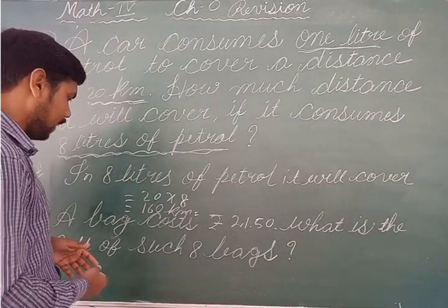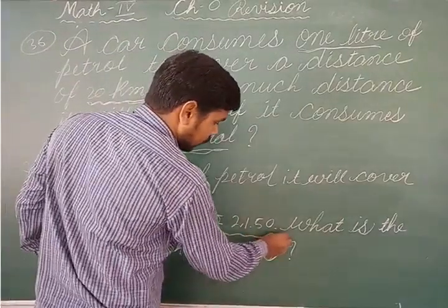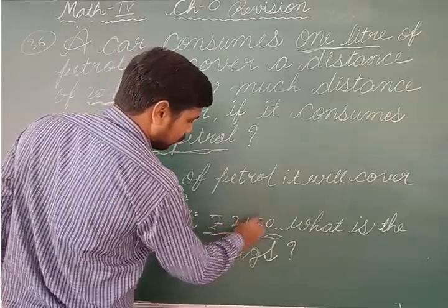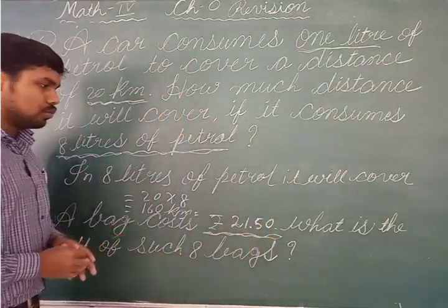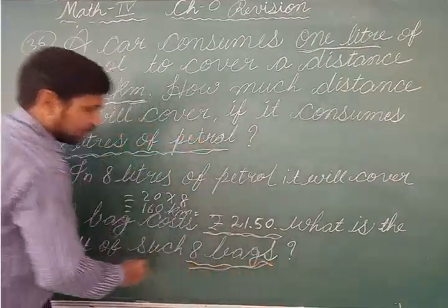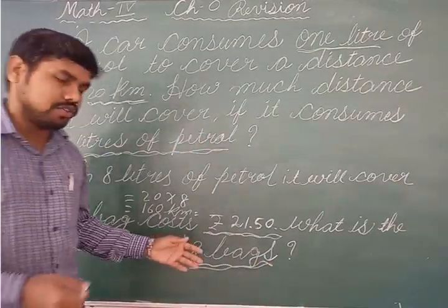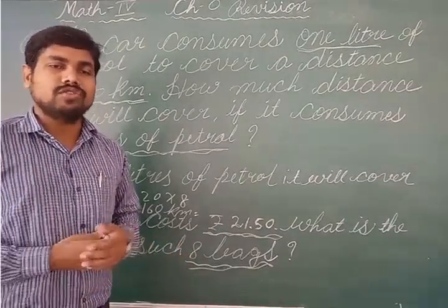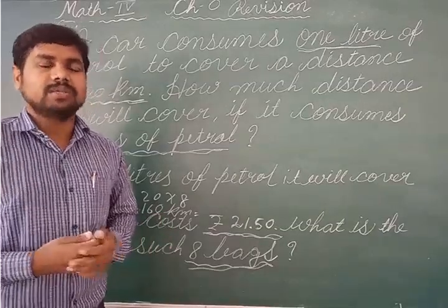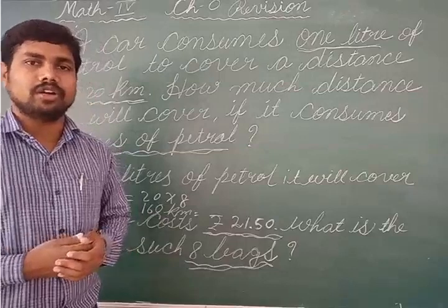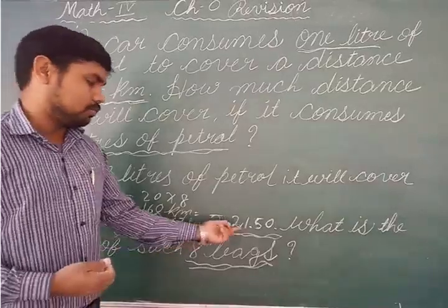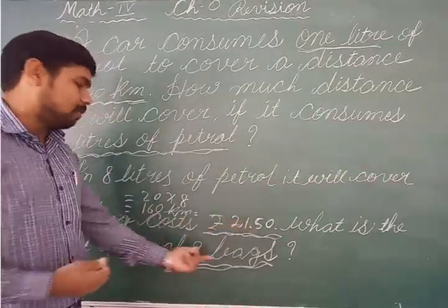Next problem: a bag contains 21 rupees and 50 paise, that means 21.50 rupees. What is the cost of eight such bags? The cost of one bag is given and you have to find the cost of eight bags. If the cost of one bag is 10 rupees, cost of two bags is 10 multiplied by 2, 20 rupees. If cost of one bag is 30 rupees, cost of four bags is 30 multiplied by 4. So here also, we will find cost of eight bags by multiplying.